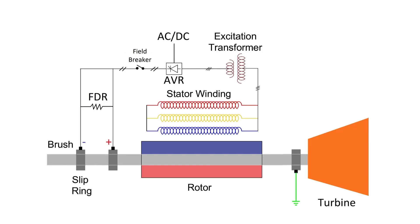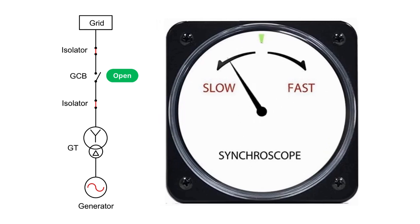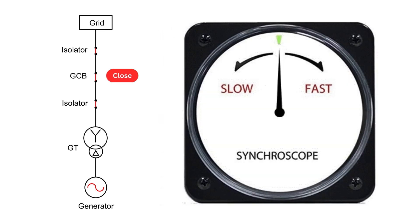The turbine is rolled at 3000 rpm to achieve 50 Hz frequency and the excitation voltage is adjusted to match the grid voltage. If the turbine speed is increased slightly, the synchroscope will rotate in the fast direction. When the needle reaches the 12 o'clock position, the operator closes the GCB to synchronize the generator with the grid.